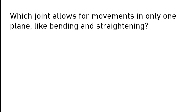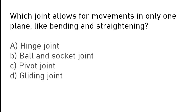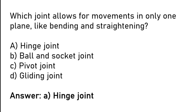Which joint allows for movements in only one plane, like bending and straightening? Hinge joint, ball and socket joint, pivot joint, or gliding joint. The correct answer is option A: hinge joint allows for movement in only one plane like bending and straightening.